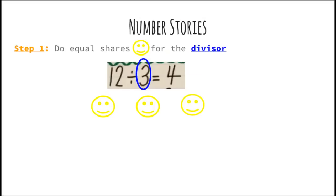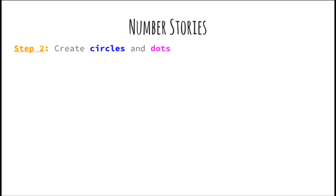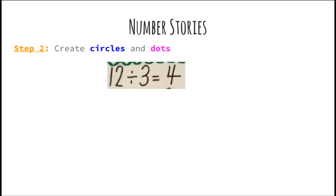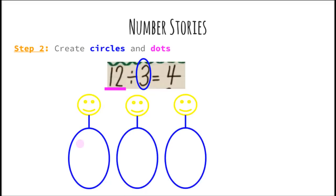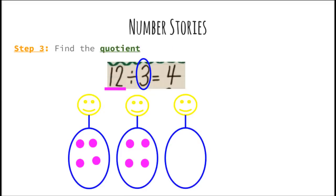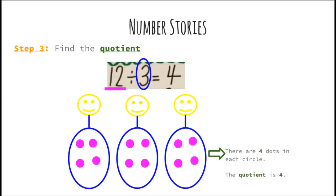Step one: do equal shares for the divisor — 3 people for your divisor. Notice the colors: blue and purple. We know that 3 is the divisor and 12 is the dividend, so we draw 3 circles; in this case ovals represent each person: 1, 2, 3. Now we divide — distributing 12 dots equally across the 3 circles, counting 1 through 12. To find the quotient, we count the dots in one circle: 1, 2, 3, 4. There are 4 dots in each circle, therefore the quotient is 4.